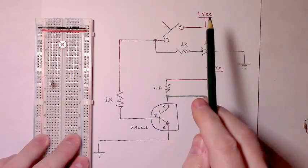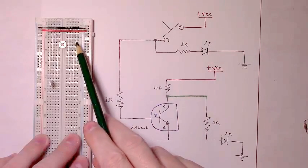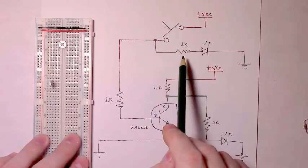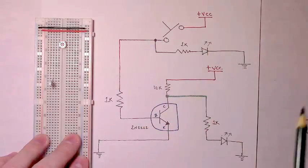The first thing we'll need is a wire from VCC to the top right-hand corner of our momentary button. And on the bottom left-hand corner of our momentary button, we'll need a 1K resistor through an LED with a cathode of that LED pointing toward ground.